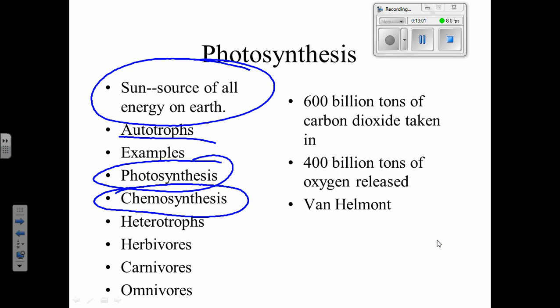You are not an autotroph — you're a heterotroph, which means you have to feed from something different than yourself. 'Hetero' means different. To be a heterotroph you could be a herbivore — only eat plants — a carnivore — only eat meat — or an omnivore, which is what most of us are. Bears are actually omnivores: they eat berries, roots, and occasionally meat.